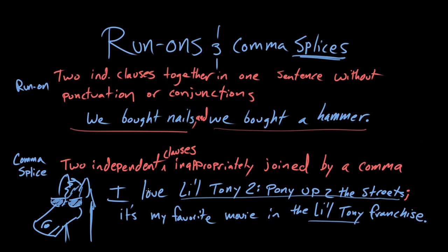To review: a run-on is two independent clauses together in one sentence, joined inappropriately without punctuation or conjunctions — like 'we bought nails, we bought a hammer,' where there's no clear division between clauses. The fix is to add a comma and a conjunction, or combine them using a semi-colon. A comma splice is essentially a run-on that hasn't been fixed all the way — the comma is being used, but we need stronger punctuation like a semi-colon to distinguish the two independent clauses. That is how you identify and fix run-ons and comma splices.